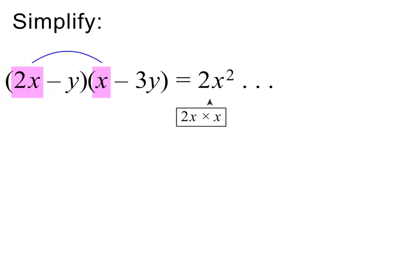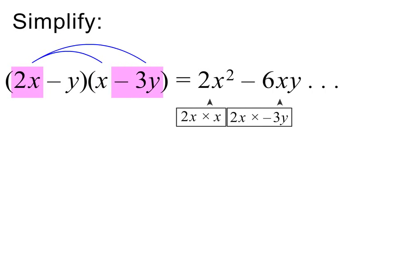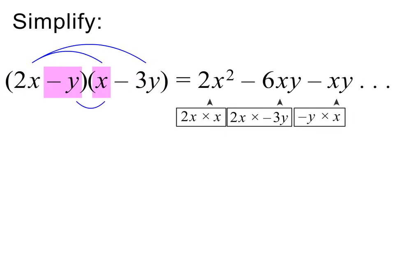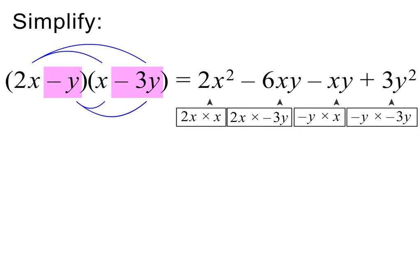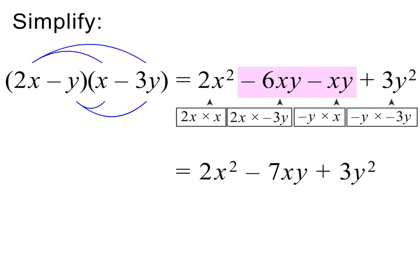Here is the next example — please pause and try it on your own first. We begin with the first terms: 2x times x equals 2x squared. Then the outer terms: 2x times minus 3y equals minus 6xy. Then the inner terms: minus y times x equals minus xy. And then the last terms: minus y times minus 3y equals plus 3y squared. We again have like terms — minus 6xy minus xy equals minus 7xy. Please pause to check my working.